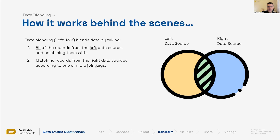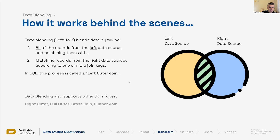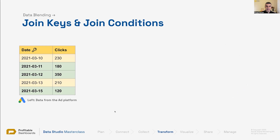It matches based on join keys that we define. So before jumping into Data Studio, we understand how it's supposed to work: it gets the left data source, tries to find matching data points from the right data source — for example, for each user ID, we check if there's information in the right data source. If something in the right data source doesn't match anything in the left, it will be left out.